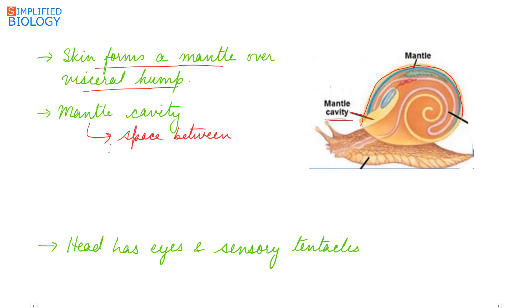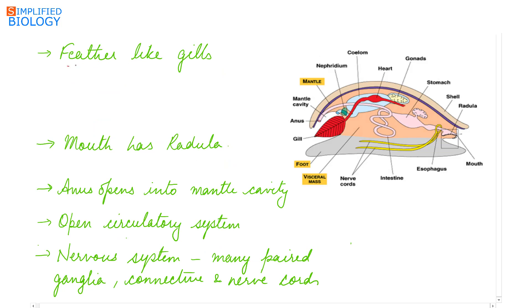They have eyes and sensory tentacles. Feather-like gills are present in the mantle cavity. These are referred to as ctenidia. They help in respiration and excretion.